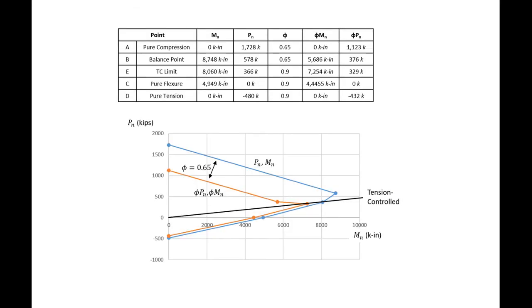When we're applying our phi factor, we take our phi times both our MN and PN. So here you can see what I'm taking phi times PN and phi times MN to get these last two columns.